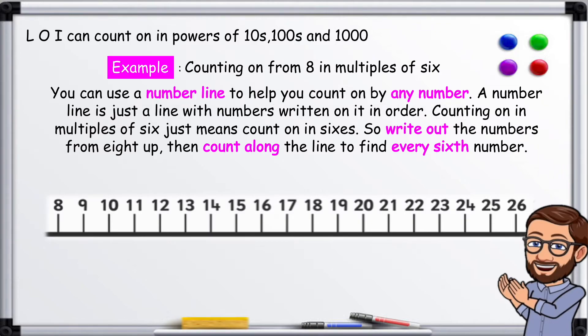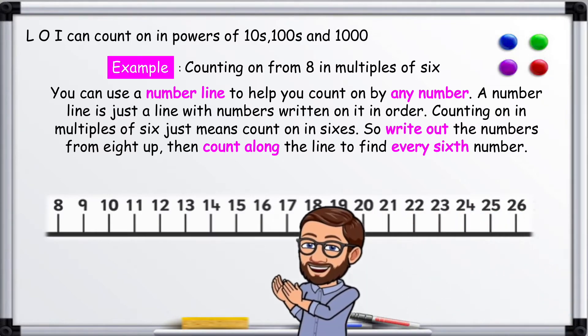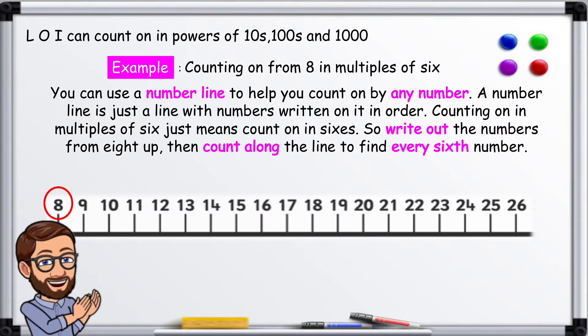So write out the numbers from 8 up, then count along the line to find every sixth number. 1, 2, 3, 4, 5, 6. Our next number is 14.